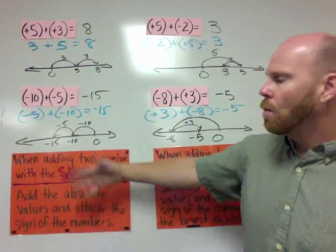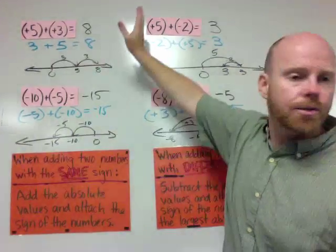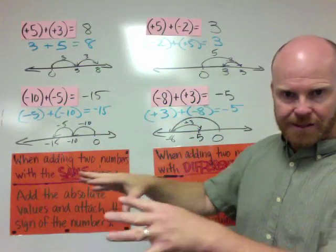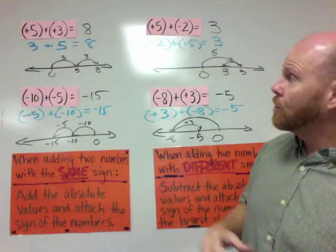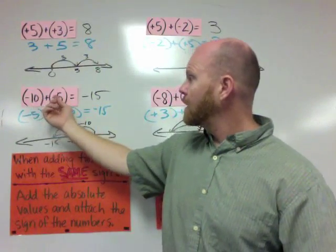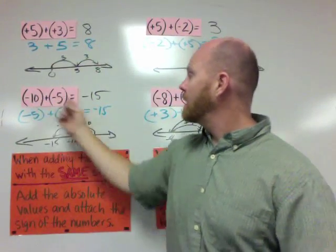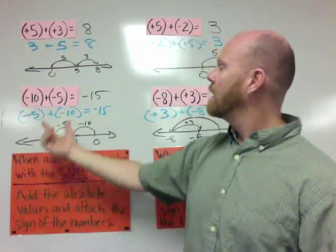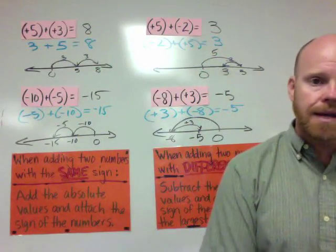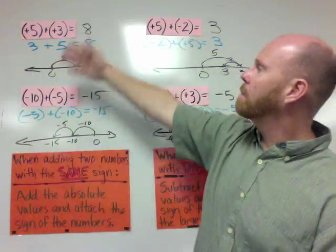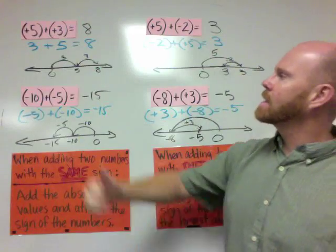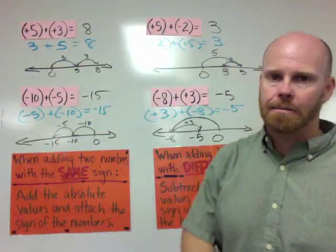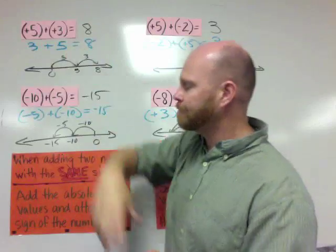Back here with same signs, we just add the two absolute values and stick the sign of the two numbers on the answer. 5 plus 10 is 15, and since both were hops to the left, we stick the negative sign in front. Up here, 5 plus 3 is 8, and since they were both hops to the right, we stick the positive sign to the 8.